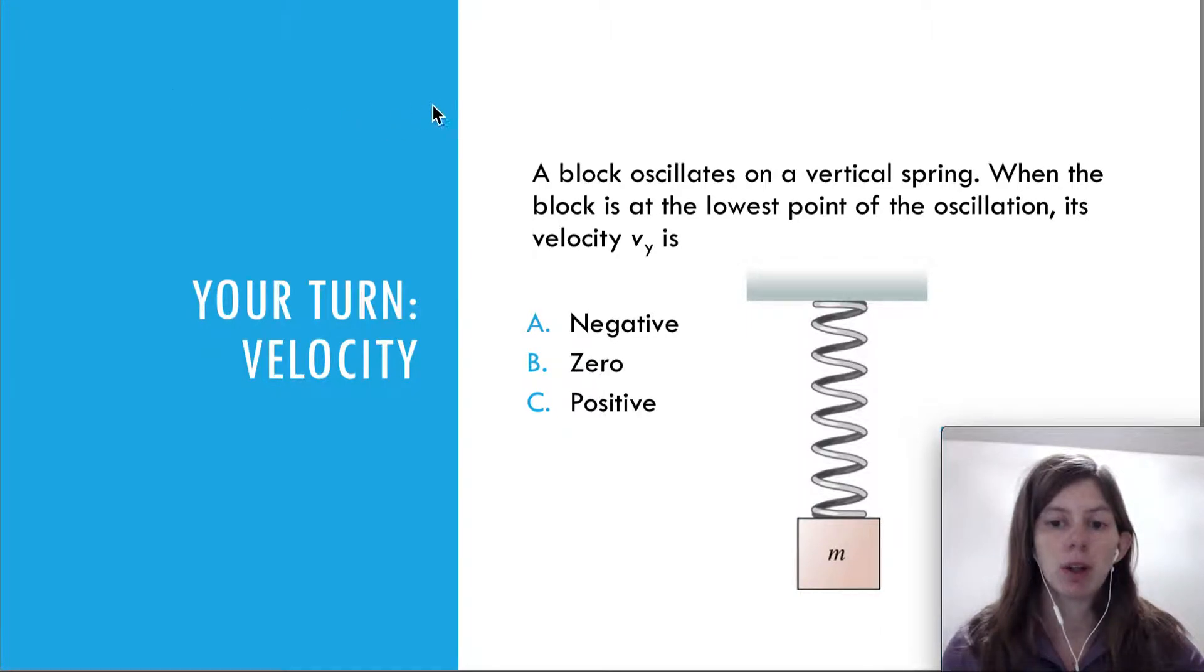Let's look at a few questions related to what we just talked about. A block oscillates on a vertical spring. When the block is at the lowest point of the oscillation, its velocity v_y is what?